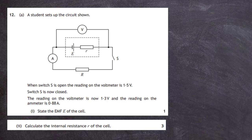Question 12 part a2: calculate the internal resistance r of the cell. We're given that when switch S is open the voltmeter reads 1.5 volts (the EMF), and when closed it reads 1.3 volts with 0.88 amps on the ammeter. I label all key components: for the internal resistor I note V (lost volts), the current through it, and the resistance value — that's what we need to find.